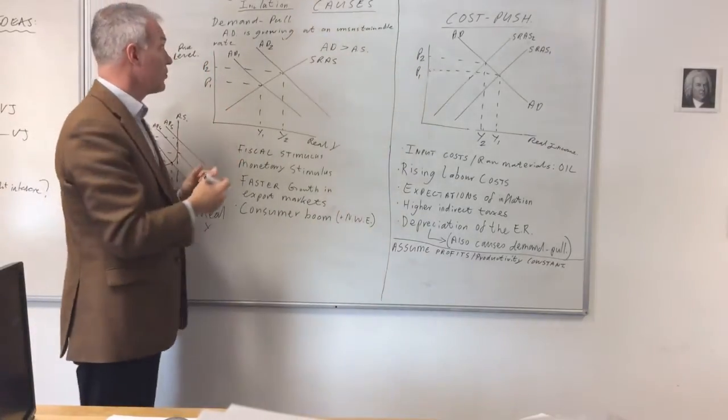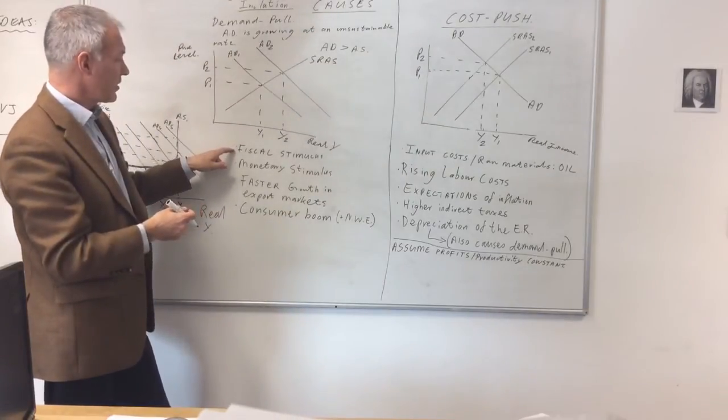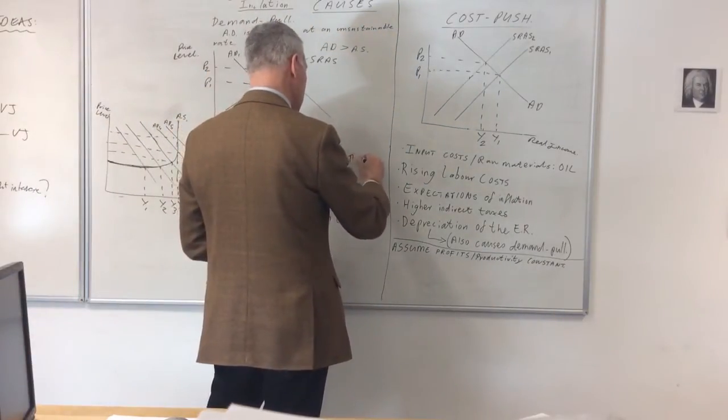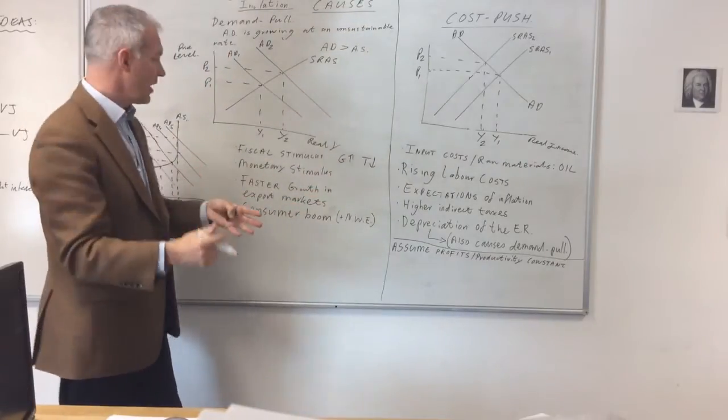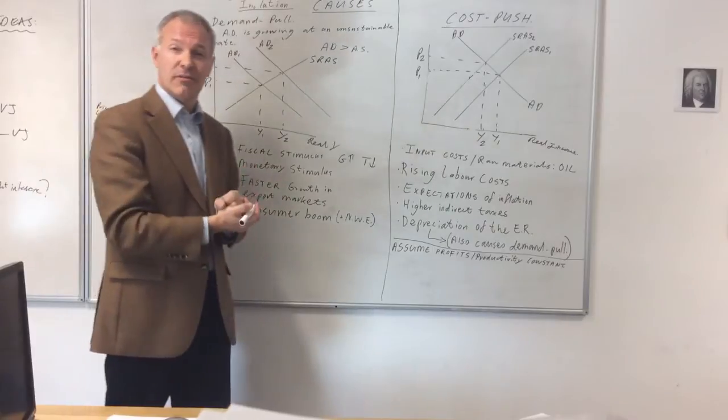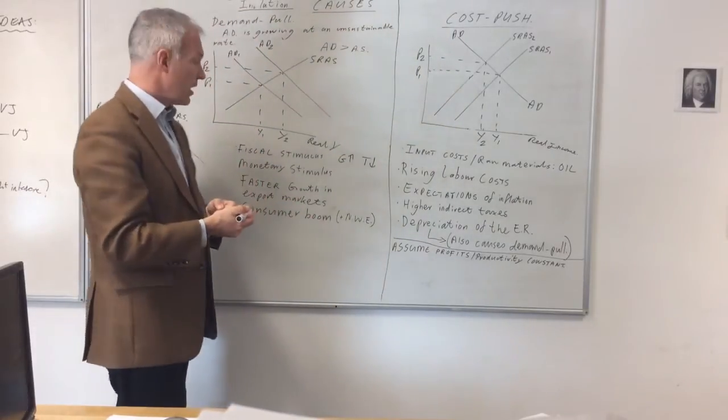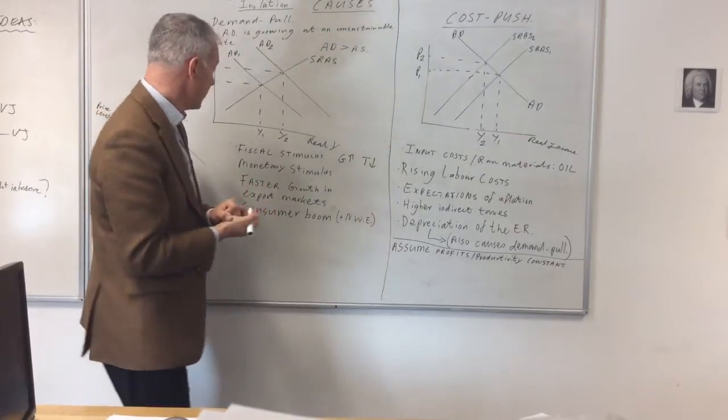What are the causes of demand-pull inflation? Well, one cause could be an excessive fiscal stimulus. If the government increases government expenditure and or reduces taxation to a greater extent, this boosts aggregate demand. And indeed, there's a multiplier effect that would take place where there would be additional spending and an additional increase in aggregate demand, yet more inflation.